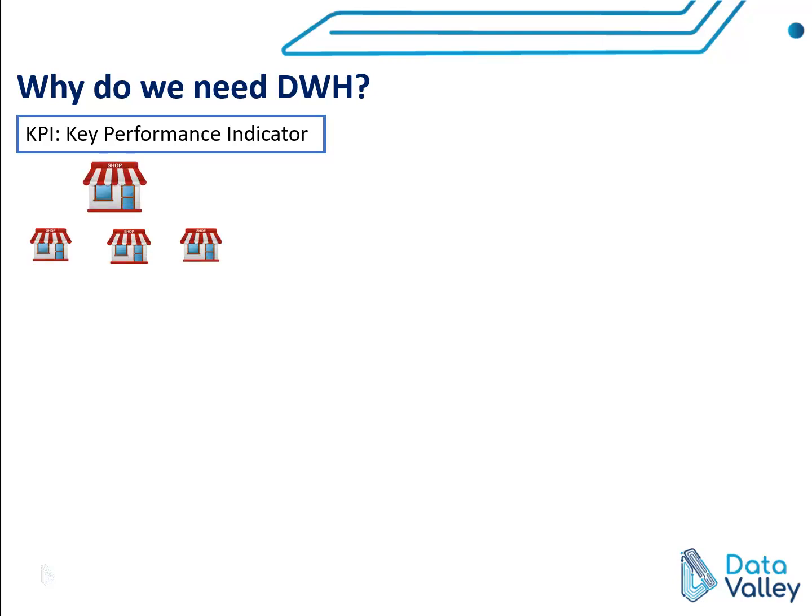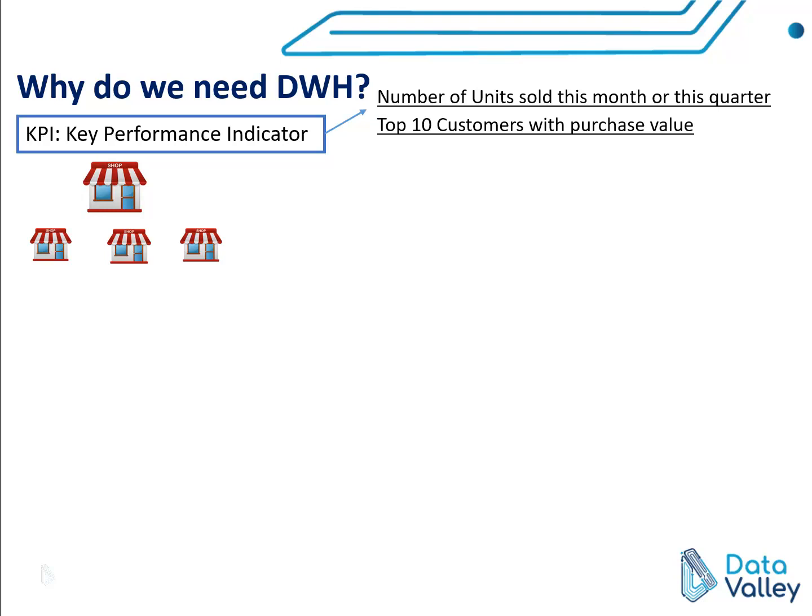Let's take an example of a series of retail shops which sell electronic devices or any kind of product or service. What kind of KPIs can we have in such a business? We can have KPIs like: what is the number of units sold this month or this quarter compared to the previous month or quarter, who are the top 10 customers by purchase value, and what are the top 10 branches from a sales point of view or which achieve high sales targets. KPIs will be different from business to business, depending on your business logic and the product or service you offer.